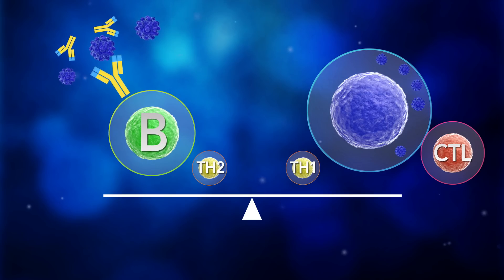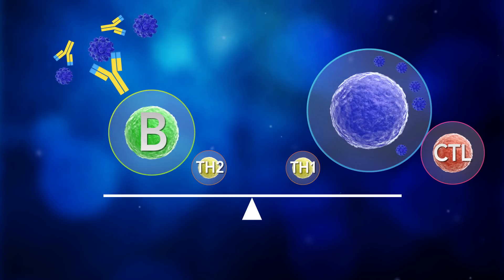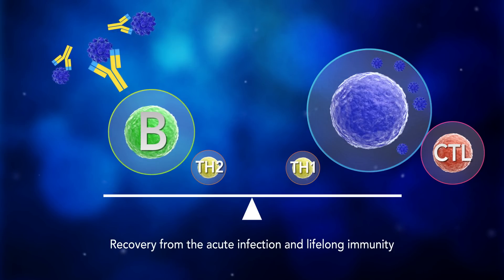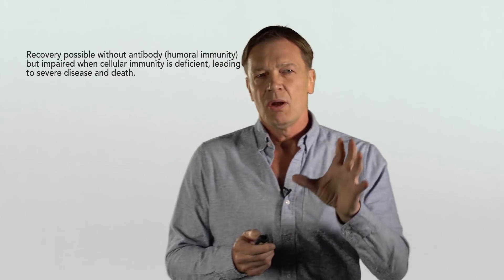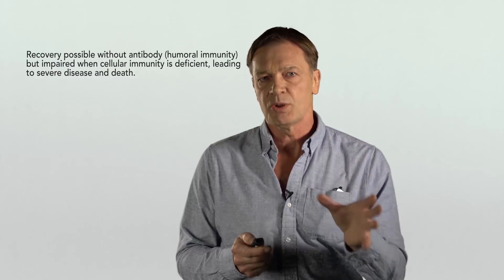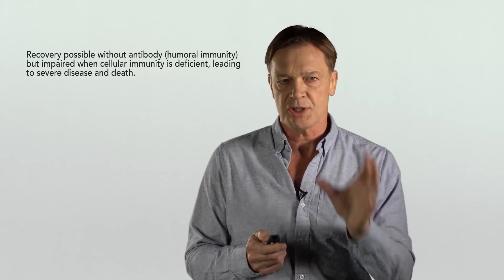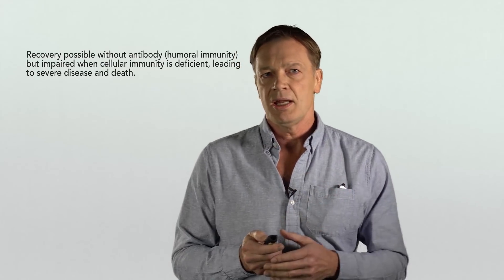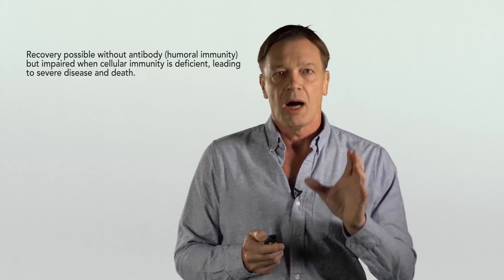As in everything in life, balance is crucial. It's crucial in vaccine responses, just as it is in infection. A balance in this response between both arms of the immune system is essential to recovery from acute infection and the development of lifelong immunity. Recovery from measles is possible even when the antibody response is somewhat deficient. But what has become clear is that an adequate cytotoxic T cell or cellular immune response is essential. Without that, people who are deficient in that aspect of their immune system are at high risk of severe measles and death.